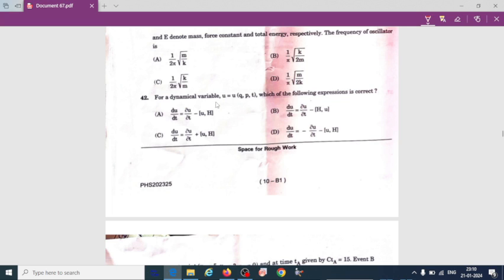For a dynamical variable u as a function of q comma p comma t, which of the following expression is correct? This is du by dt equals du by dt plus H comma u comma H.